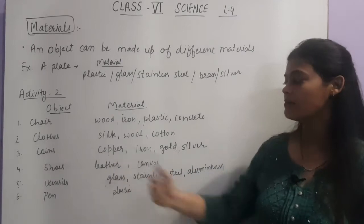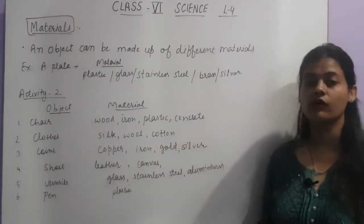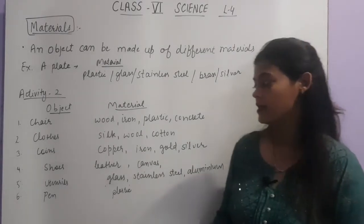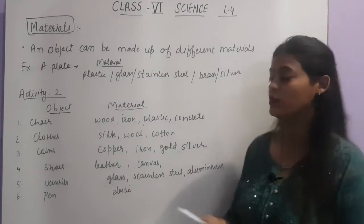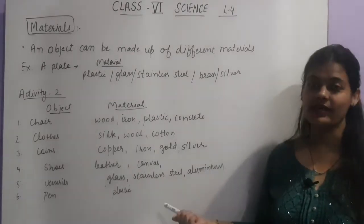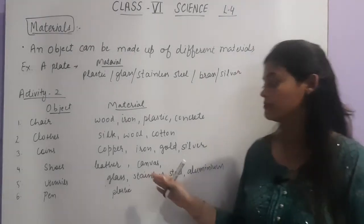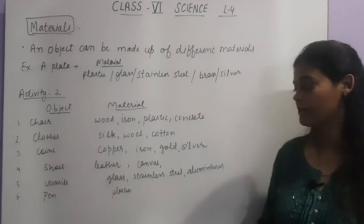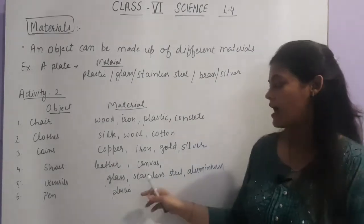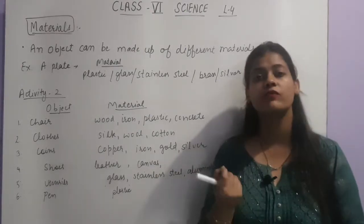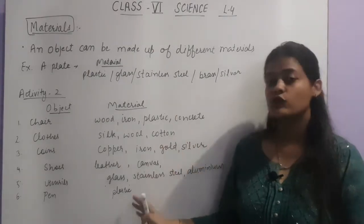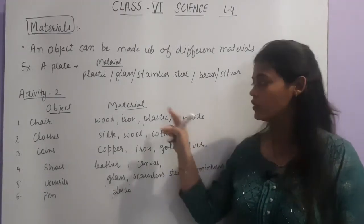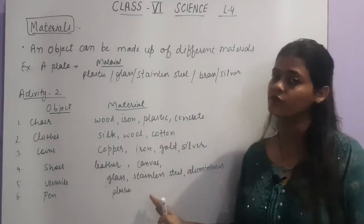Next is coins — coins can be made up of copper; iron coins are there; gold coins are there; silver coins are there. Next is shoes — shoes can be made up of leather or canvas. Next is utensils, which are what we use in our house — they can be made up of glass, stainless steel, aluminum, or iron. Next is pen — pen is generally made up of plastic and its tip can be made up of iron or steel. So these are the objects and the materials by which they are made. You have to complete this activity from this video.